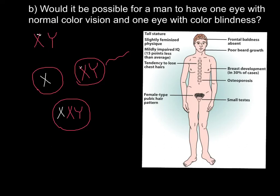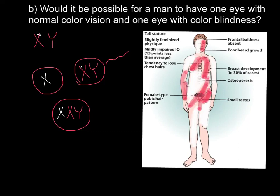Individuals with Klinefelter syndrome have tall stature, slightly feminized physique, frontal baldness, breast development, osteoporosis in 30% of cases, and female-type pubic hair. As with females, some X chromosomes are inactivated in some cell lines but active in others. Cell lines with the normal X from the mother would produce normal vision, while the other eye could be affected by the defective X from the father.